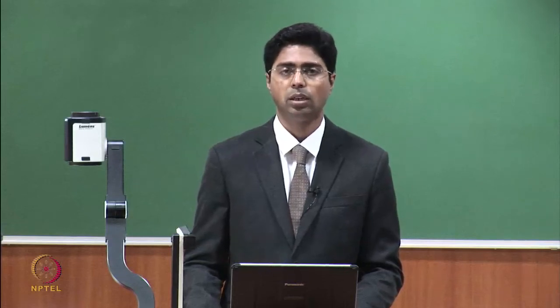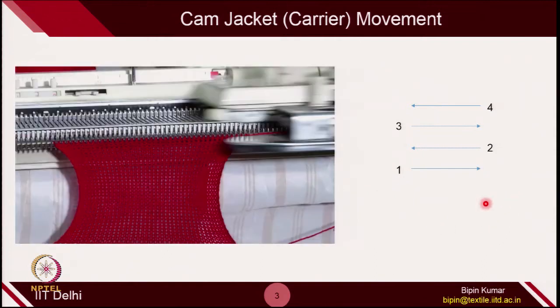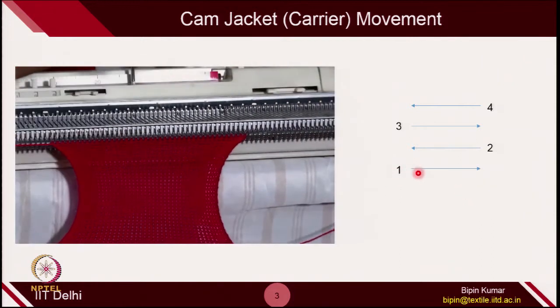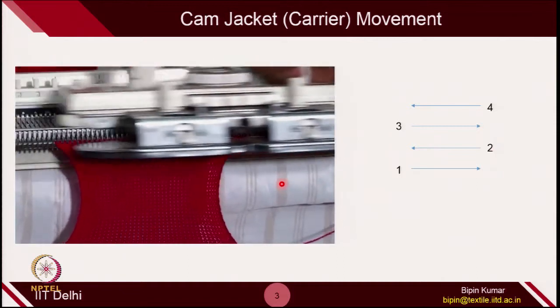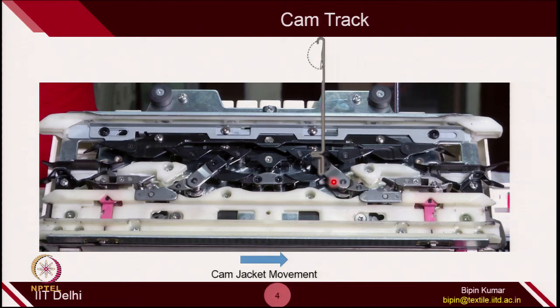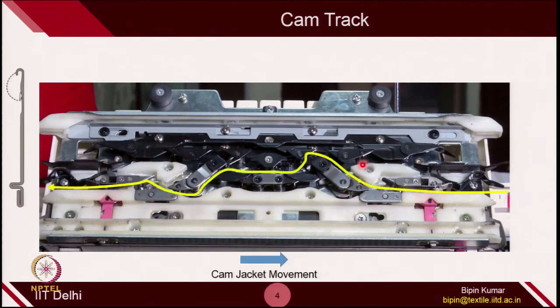For each direction of cam jacket movement, we have to specify whether it is making loop stitches, tuck stitches, or float stitches on the machine. In the fabric notation, you have to carefully indicate the direction of carriage movement. The carriage takes the cams from left to right or right to left, and that direction of motion is very important — you should indicate that as well. So in the first course it is moving left to right, second course right to left. This is how the knitting takes place on the machine.